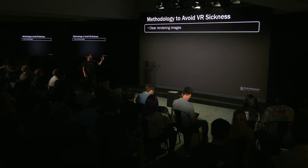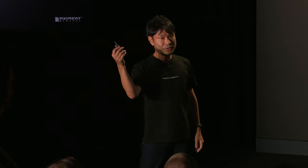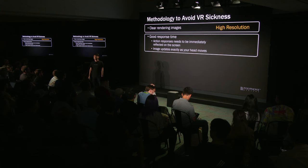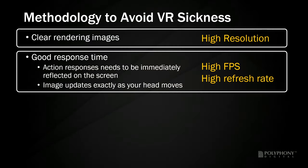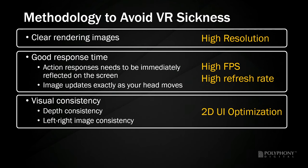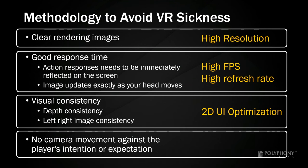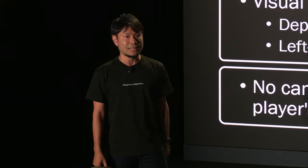This slide presents our methodology to avoid VR sickness. First, a clear rendered image is required — in other words, it must be high resolution. Next, response time must be good; user actions must be immediately reflected on the screen, and it also needs to follow the user's head movements. Therefore, high FPS and high refresh rates are required. Furthermore, there must be visual consistency such as depth and rectalized image consistency, achieved by optimizing the user interface. Finally, the camera should not move against the user's intentions. Fortunately, this is not a big problem in racing games. As you can see, a lot of rendering performance and game design are constrained, so it's quite difficult for existing games to support VR later.